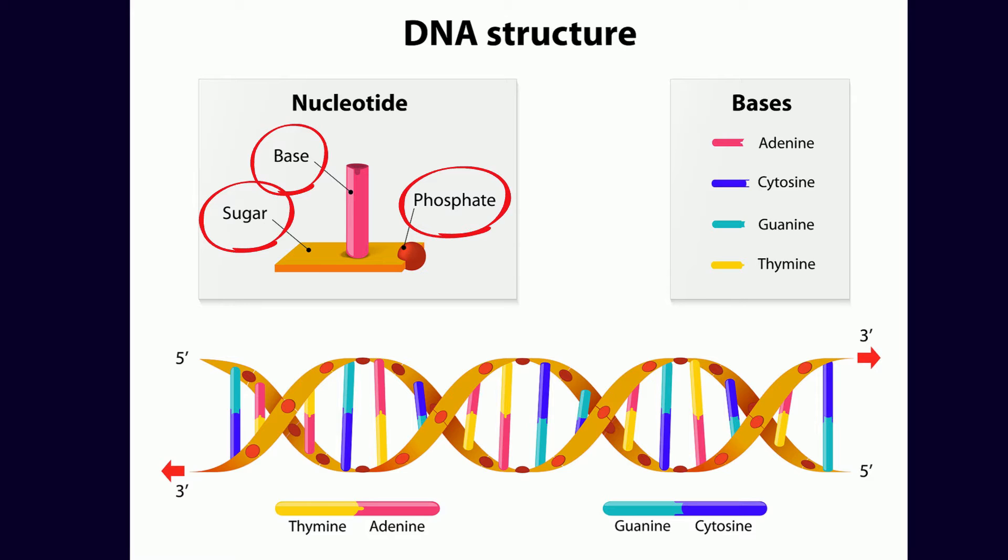The four bases found in DNA are adenine, thymine, guanine, and cytosine, shortened to A, T, C, and G.